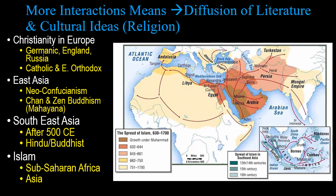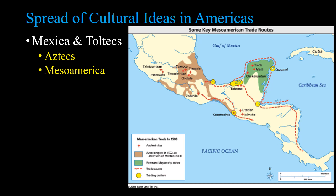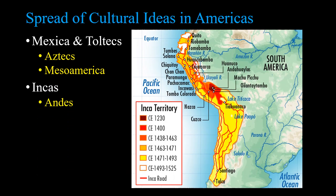Islam is the big mover in this time period — it's created in the post-classical period and spreads very quickly. In the Americas, there are major cultural centers: the Aztecs and Mexica and Toltecs in Mesoamerica, the Incas in the Andes region. They are the dominant groups spreading their cultural ideals, values, and norms to the people around them.